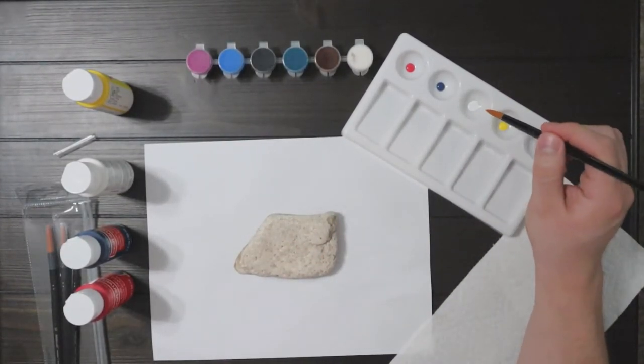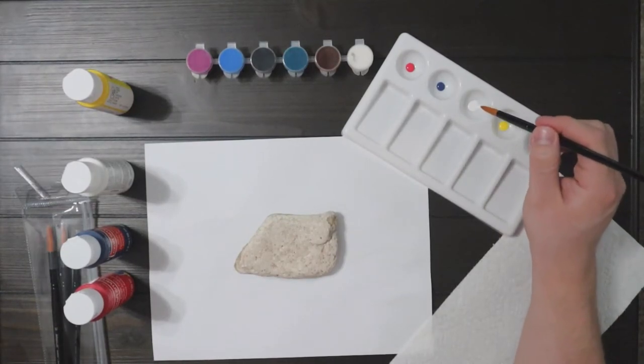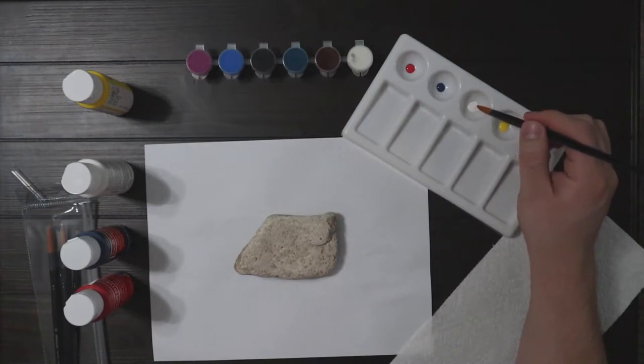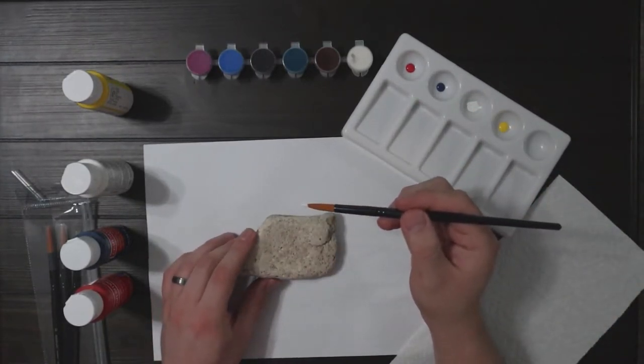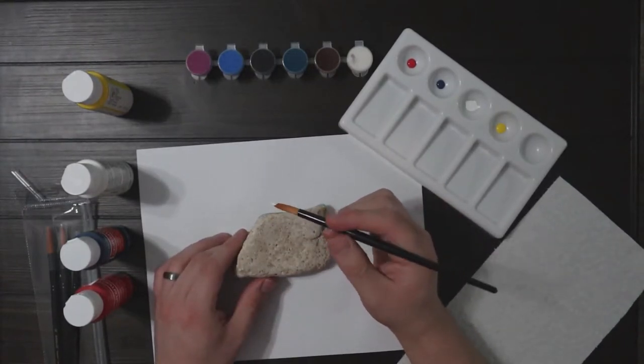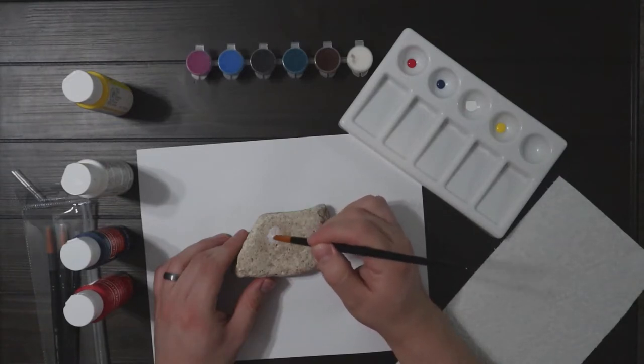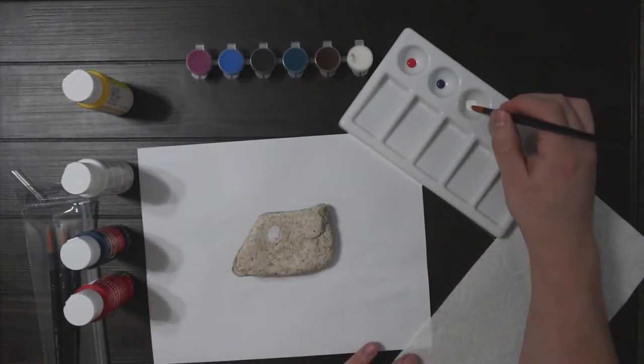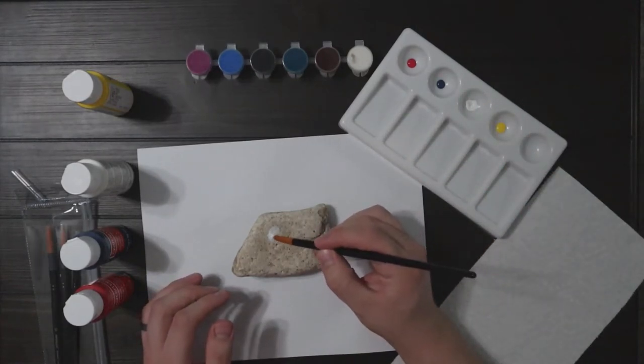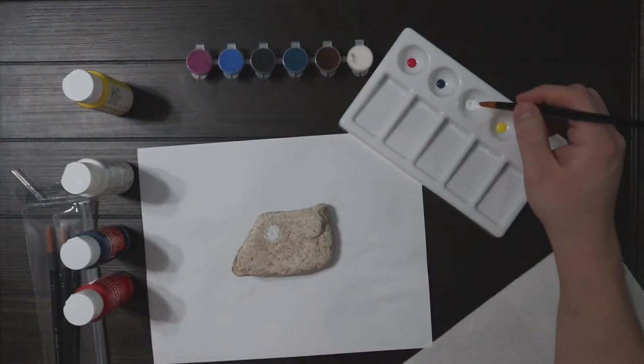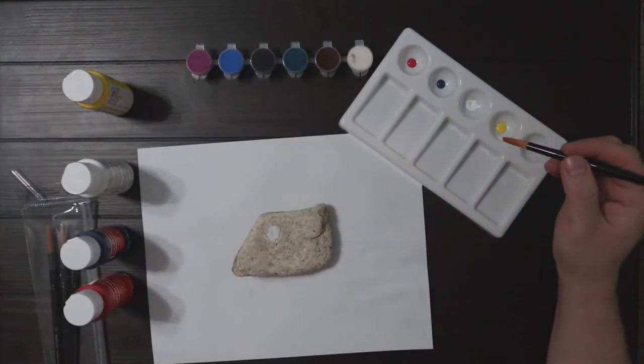So we're gonna dip it in the white first. I'm gonna paint the rock. This rock's already white so it's kind of hard to see. Let's move this out the way real fast.